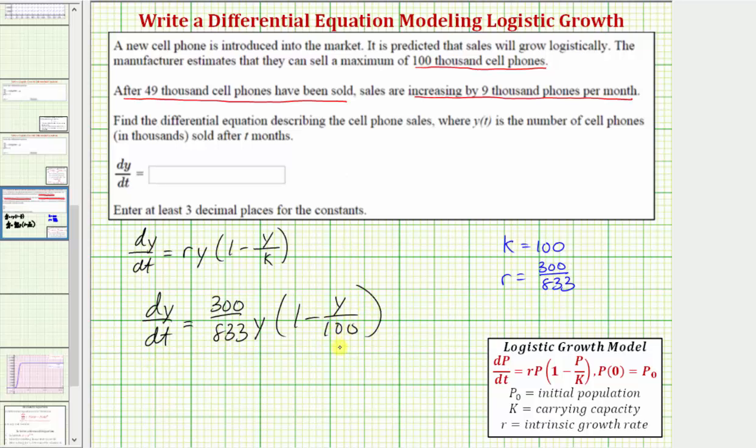So this differential equation models the logistic growth of the cell phone sales in this situation.